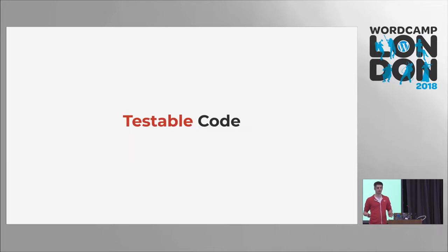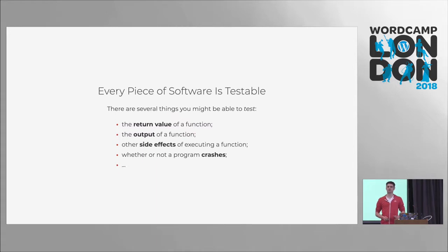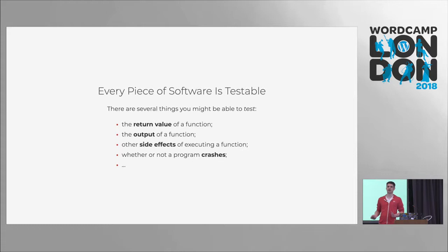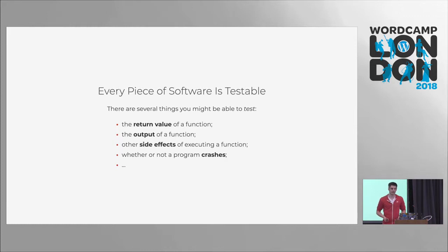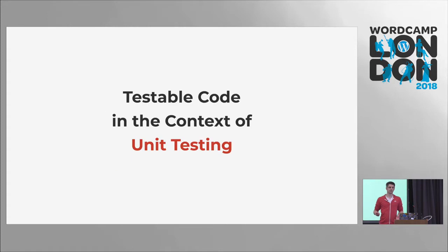One last thing related to testing: testable code. Every piece of software, every code snippet is testable somehow. You could see what's the return value of some function, what's the output you get, there might be side effects, or you start your program and it doesn't crash. But this is not what 'testable code' refers to. Testable code is most probably always in the context of unit testing — it actually means unit testable code.